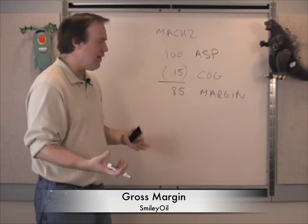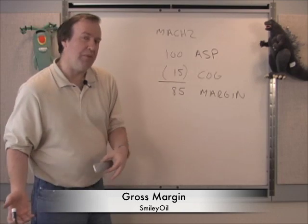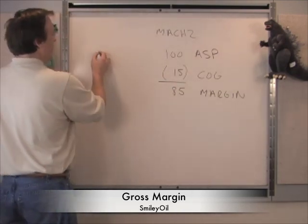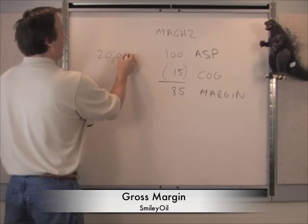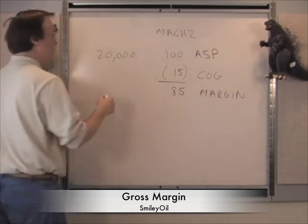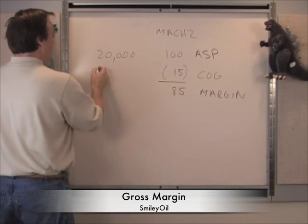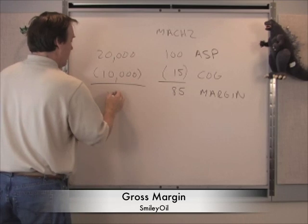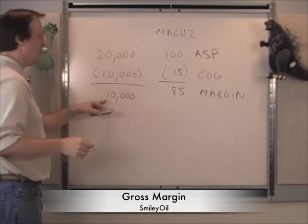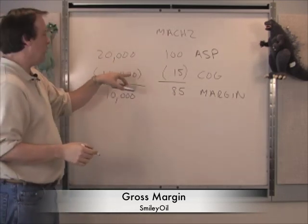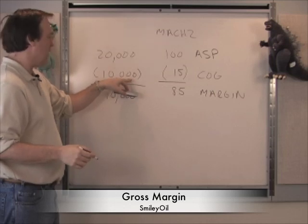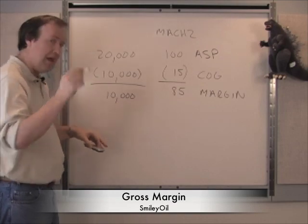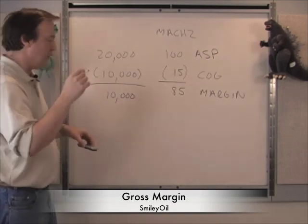Software companies are fantastic because all you have to do is make a disc and a manual, so their costs are low. If you're building a car, the structure is different. Take a Honda Accord at $20,000 — if it costs $10,000 to make, then your ASP is $20,000, cost of goods is $10,000, and your margin is $10,000.